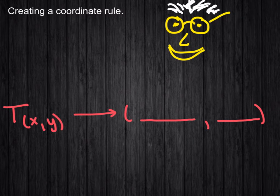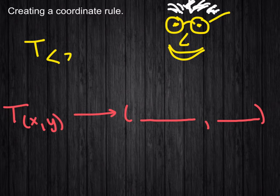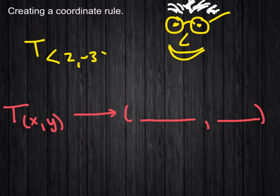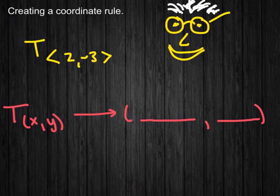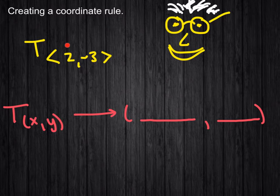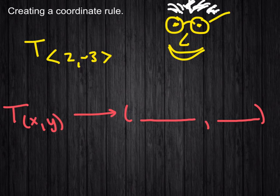Alright, let me show you what's going on with this question. This is basically converting from what we call vector formation, or vector notation, into what we call a coordinate rule. So when it's in this form, we call it vector. When it's in this form, it's called a coordinate rule.